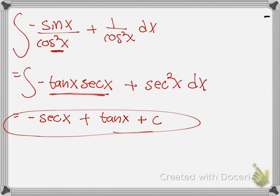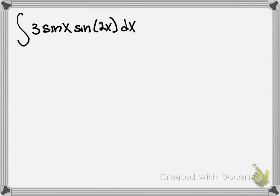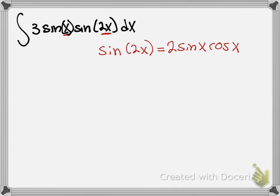Let's do one more for this video — one more strategy using a trig identity. I've got the integral of 3 sine of x times sine of 2x dx. This one is a bit trickier because the arguments of the two trig functions are different, so a simple u-sub won't work directly. We need to use the identity sine of 2x equals 2 sine x cosine x.